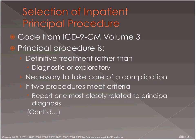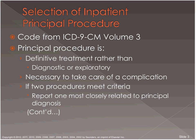Regarding selection of inpatient principal procedure, you code from ICD-9 volume three. Your ICD-9 manual has three sections: the first two deal with diagnosis coding for a condition or problem, and the third section at the very back — behind all your nines, E codes, and V codes — is volume three, which is only for inpatient procedures that the facility is charging for. The physician will code procedures as an outpatient using the CPT manual, but the facility can charge for the procedure as well if they are the main provider for the surgery.